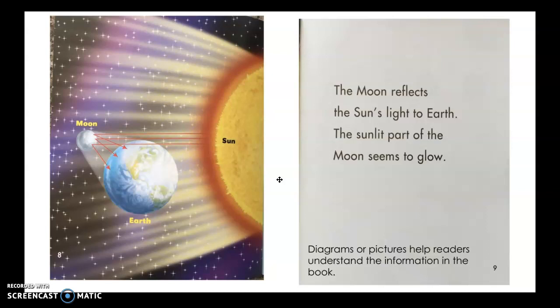You will notice on the left side, that's called a diagram or picture. And they help readers understand the information in the book. The big yellow, orange thing, that's the sun.